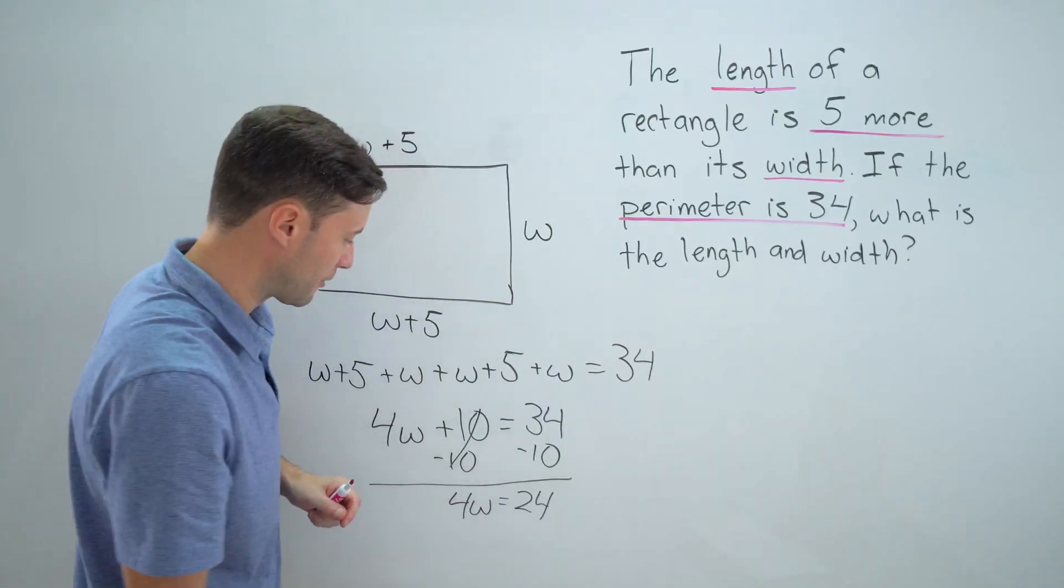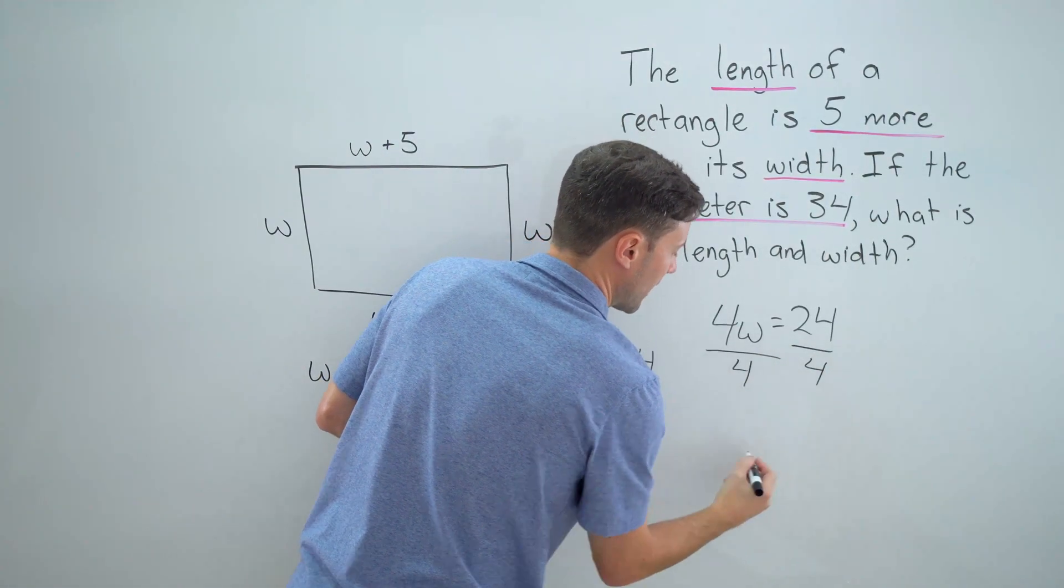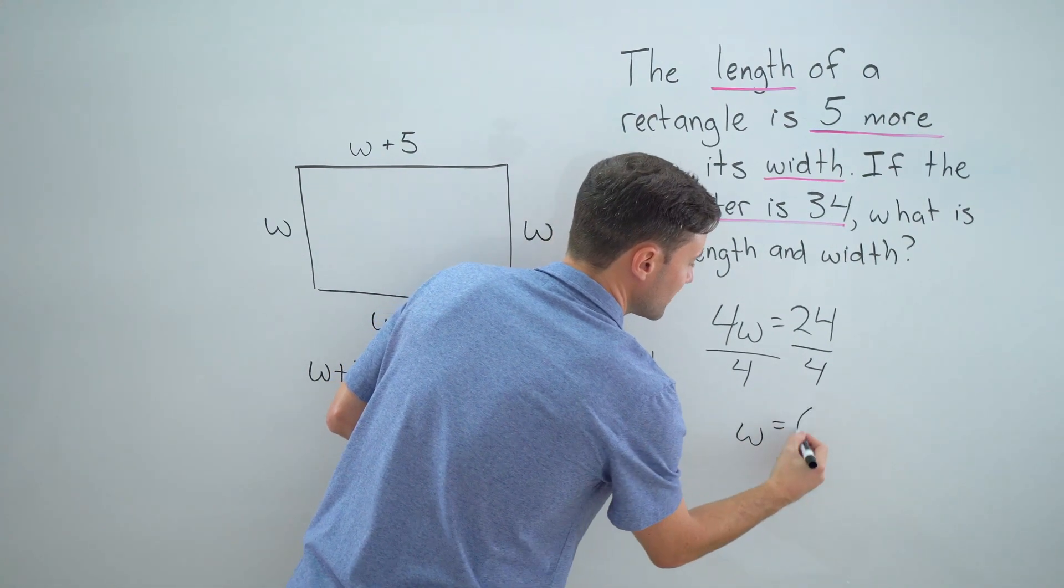I'll finish it over here. I'm running out of room. Last step: divide both sides by 4, and I get w equals 6.